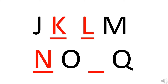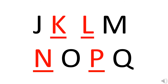Now that we have written letter N, we have O and again there is a blank. What comes after O? Yes, letter P comes after O. So we will write letter P. Now that we have written letter P, we have letter Q and we have completed our exercise. Now we will do one more exercise.